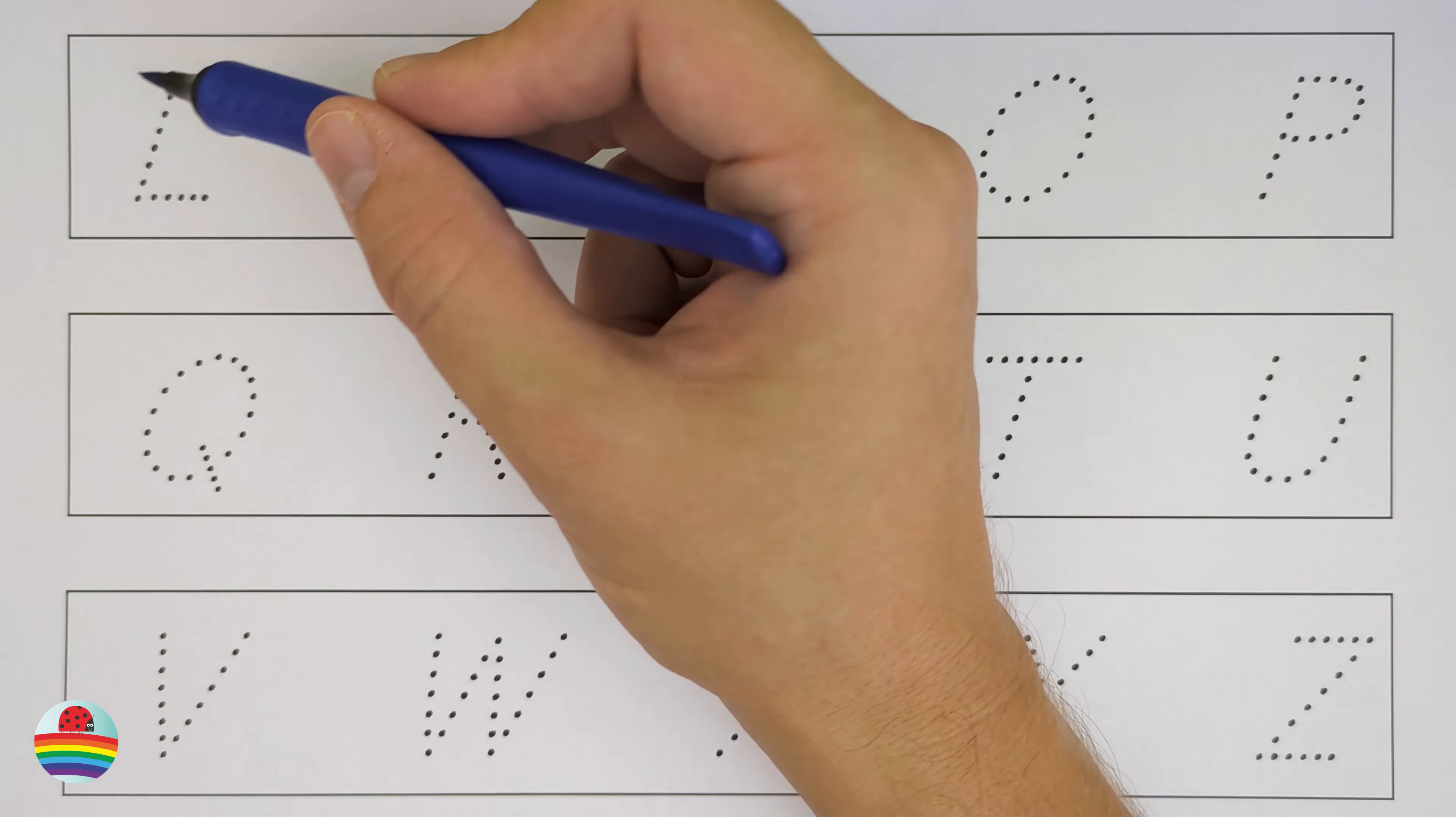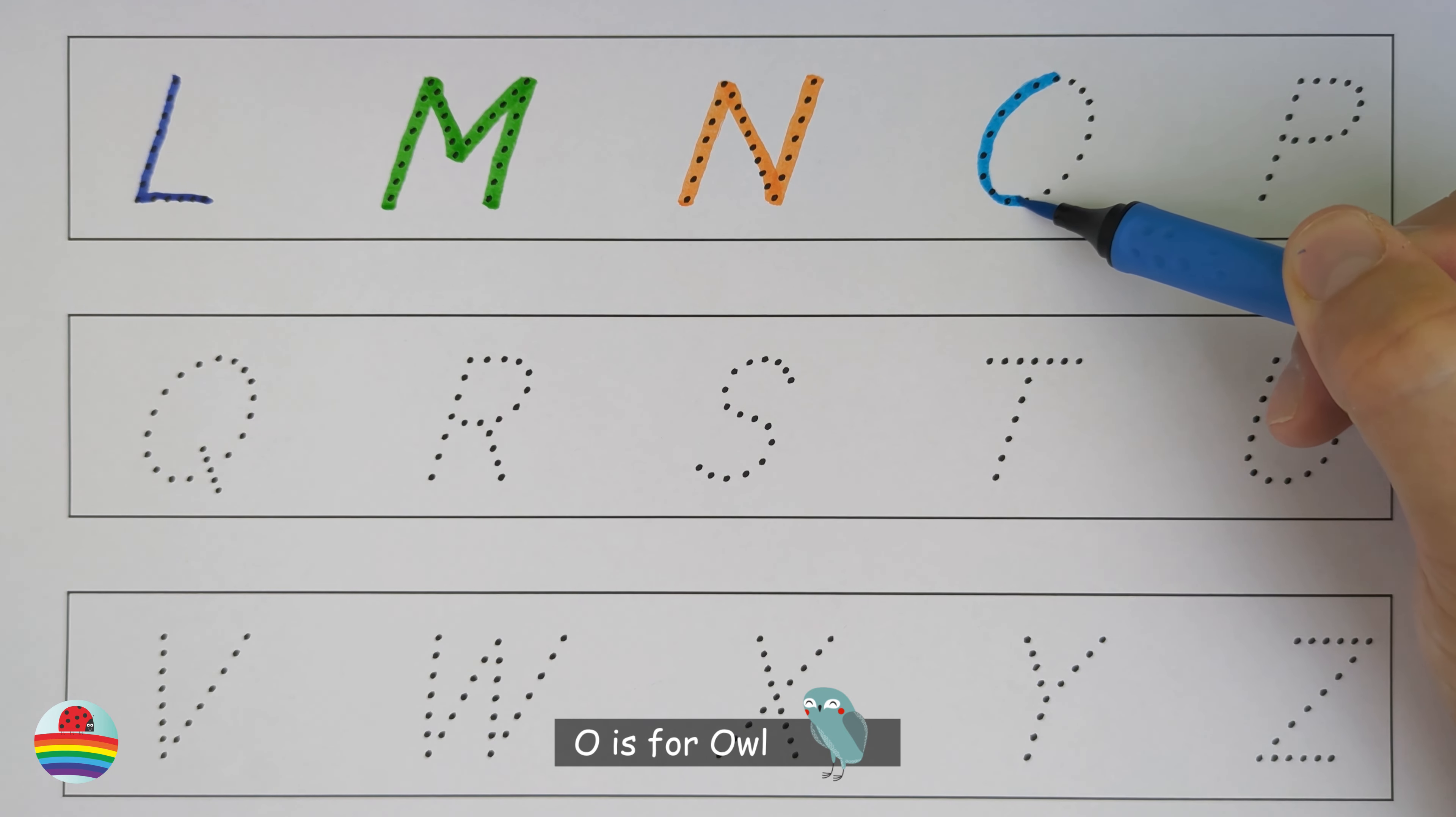M. M is for monkey. M. N. N is for narwhal. N. O. O is for owl. O.